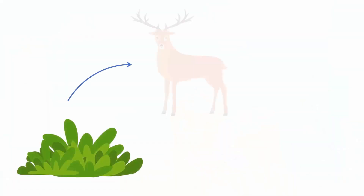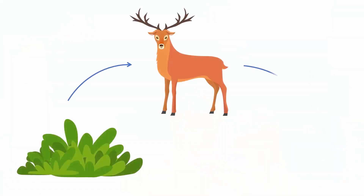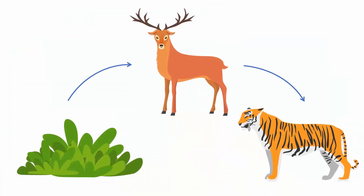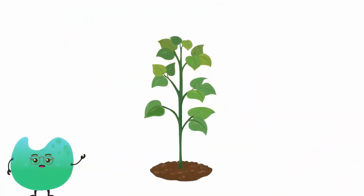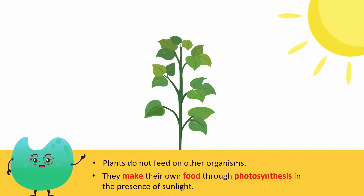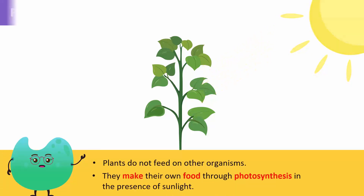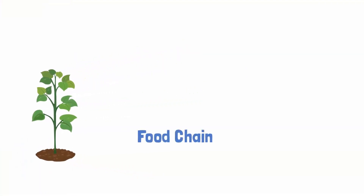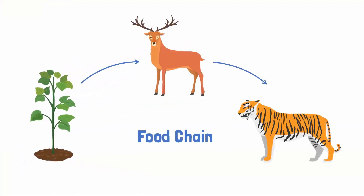The grass is eaten by the deer and the deer is eaten by the tiger. This is how organisms obtain energy. Plants do not feed on any organisms. They make their own food through photosynthesis in the presence of sunlight. Therefore, plants are called producers. All living things depend on plants for their food directly or indirectly, as plants are at the beginning of the food chain.